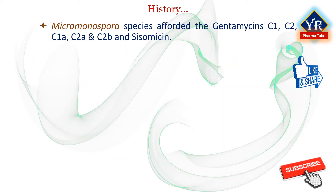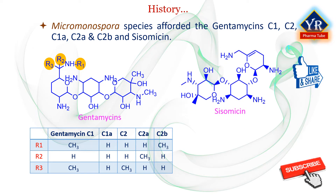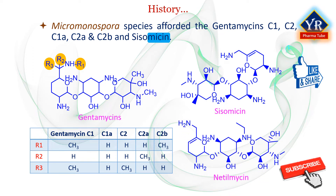Other aminoglycosides were subsequently isolated and it was found that Streptomyces microorganisms were not unique in producing structurally related compounds that paralleled the antibacterial action of the kanamycins. Micromonospora species afforded the gentamicins — that is gentamicin C1, C2, C1A, C2A, and C2B — and sisomycin. In order to distinguish their origin, these derivatives were given a different suffix, i.e., M-I-C-I-N. Netilmycin is a semi-synthetic derivative of the naturally occurring aminoglycoside sisomycin. In general, the research and development of the aminoglycosides has followed such that new agents have entered the market infrequently throughout the decades.